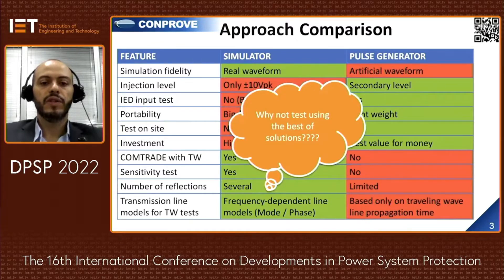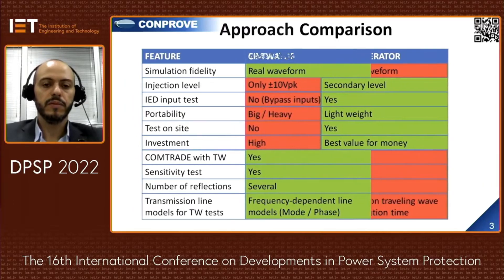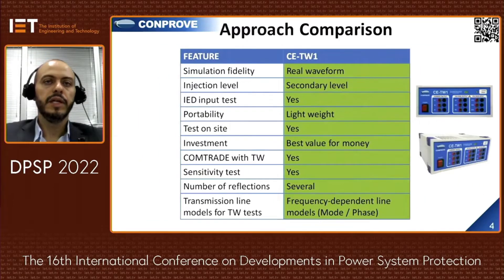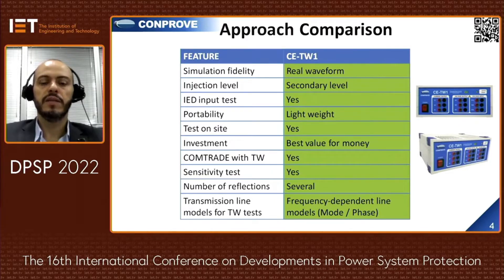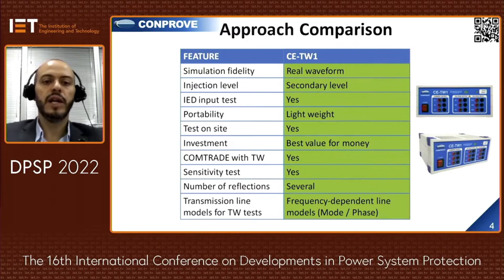Why not use the best of both solutions? Here is where the magic takes place: the CETW1. It generates real waveforms at secondary level that fit the IED inputs and permits testing of the input circuit. It is lightweight and can be carried for on-site testing, with the best value for money. It can export COMTRADE TW and megahertz waveforms, import COMTRADE for playback, and analyze faults using the Bewley lattice diagram. With CETW1, you can perform sensitivity tests and reproduce several reflections. Last but not least, the solution uses a frequency-dependent phase-domain line model.